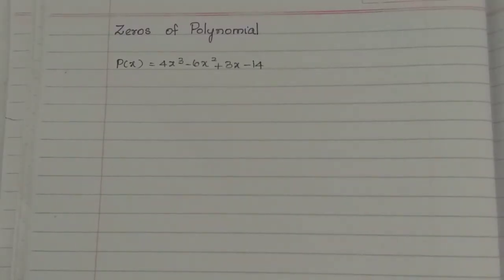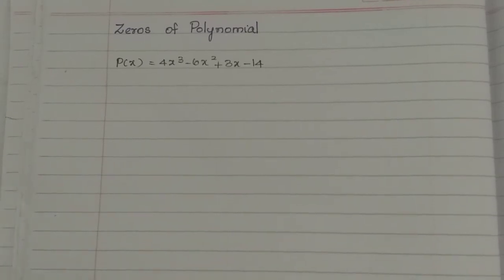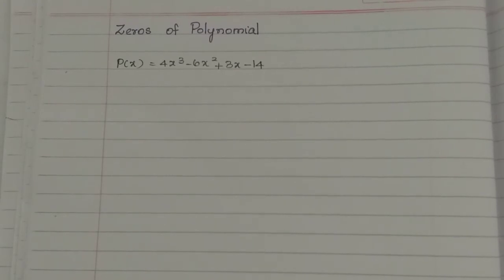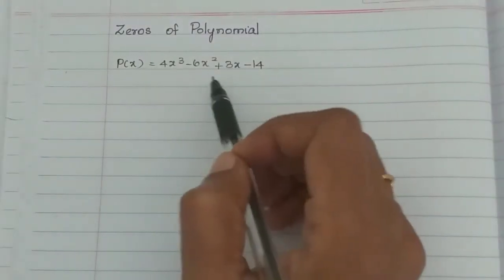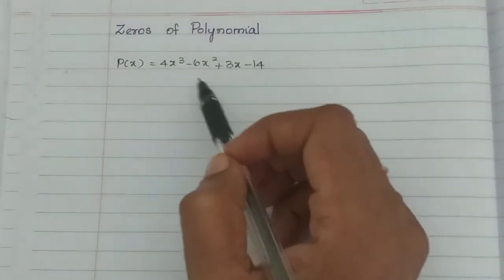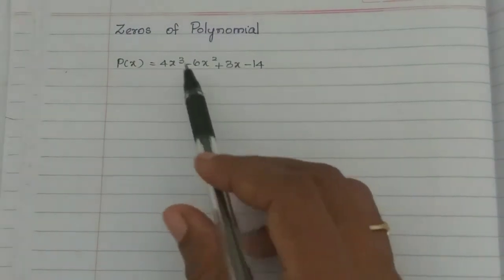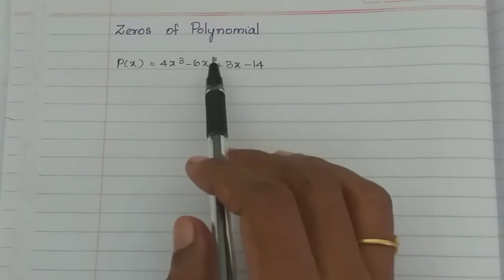So now let's see the zeros of a polynomial. What do we need to do? The value of the polynomial means x is equal to some value — it could be any value: an integer, a real number, whatever it may be. Finally, if that value makes the polynomial equal to 0, that is called the zero of the polynomial.